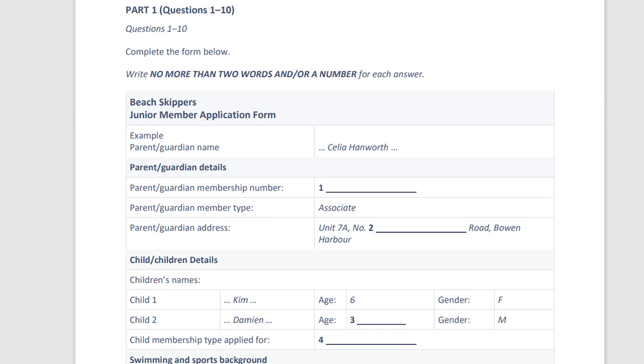Good morning. How can I help you? Oh, hi. Good morning. Well, I've recently moved back here from overseas and I'd like to enquire about enrolling my children in the club. I hear you have a great program for kids. Yes, we do. Our kids' program is called the Beach Skippers Club and it's for 5 to 16-year-olds. Sounds great. My two are in the age range. What do I need to do to enrol them?